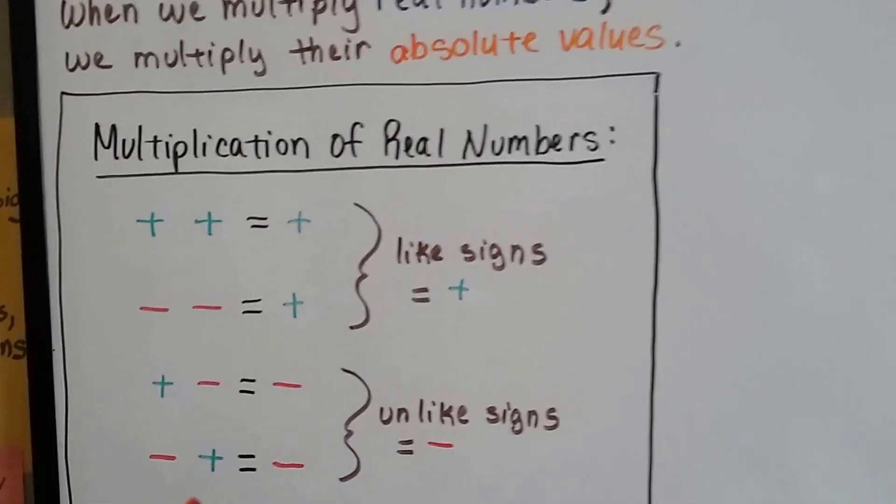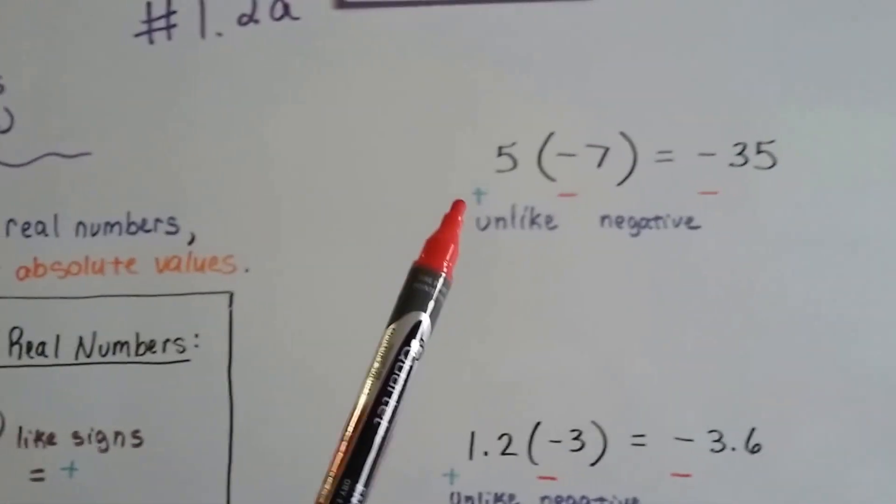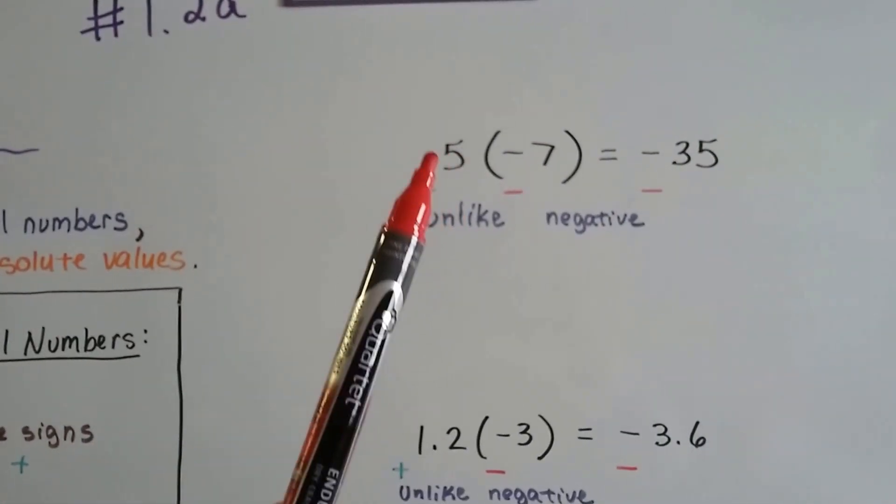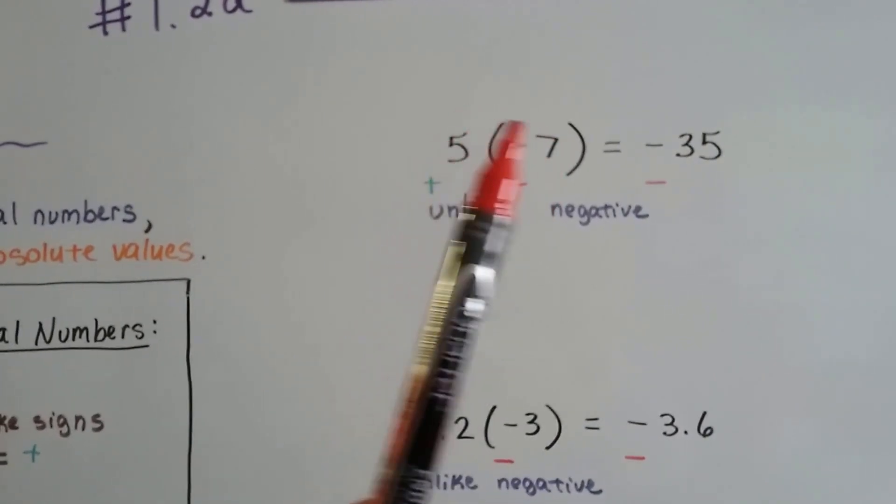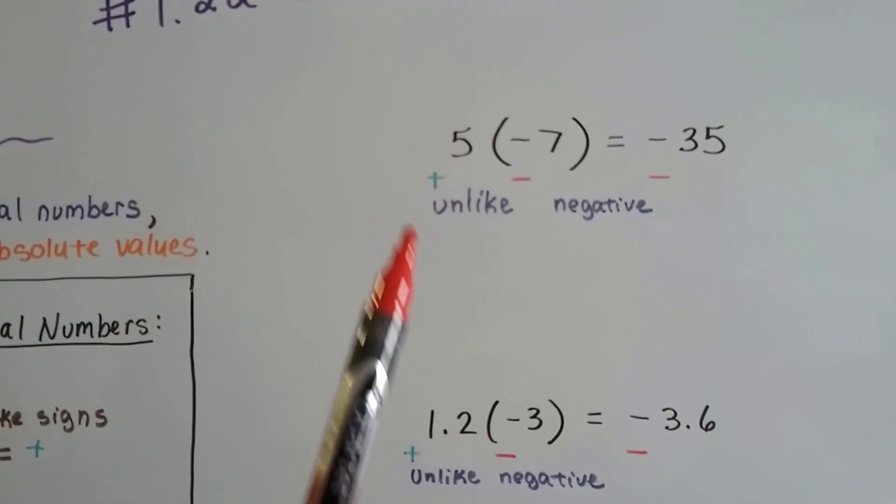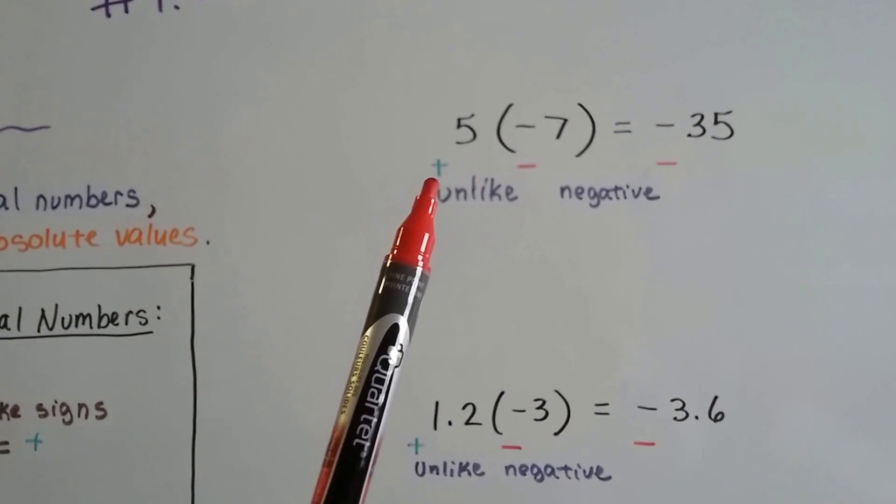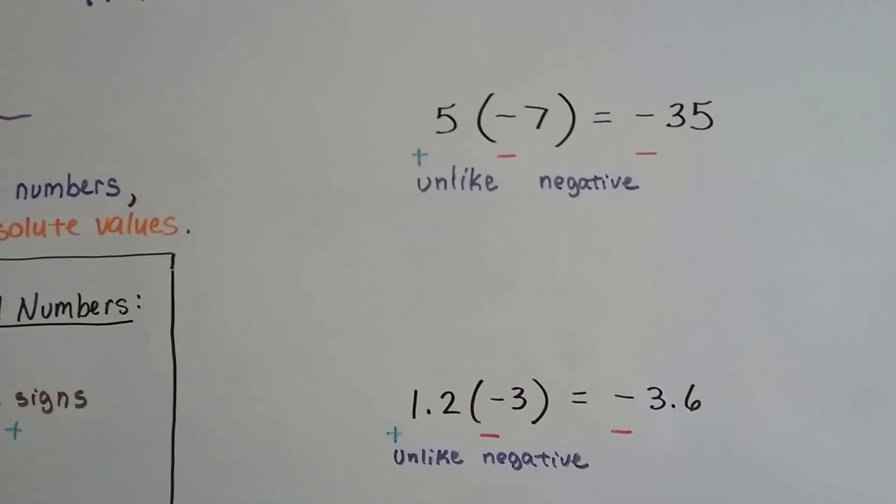We multiply and get the absolute value. If we have a positive 5 and a negative 7, the absolute value of them multiplied is 35. And because the signs are unlike, our product is a negative.